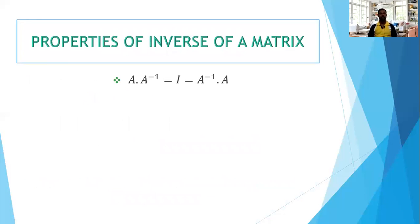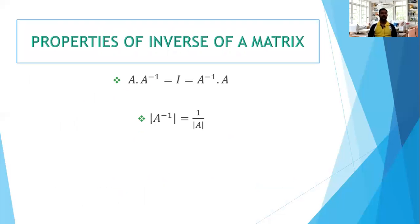Let us see some properties of the inverse of a matrix. A into A inverse equals I, which is the same as A inverse into A. The determinant of A inverse is 1 by determinant of A. We can expect exam questions like: given determinant of A, find determinant of A inverse. Directly, determinant of A inverse is 1 by determinant of A, and they are reciprocals of each other.